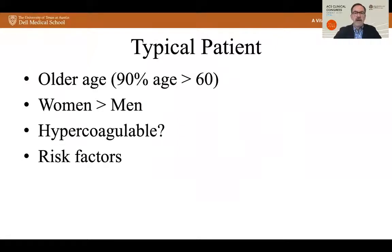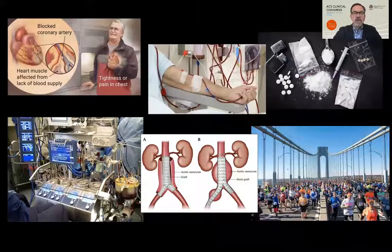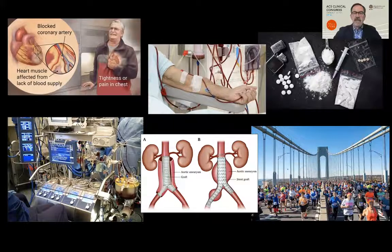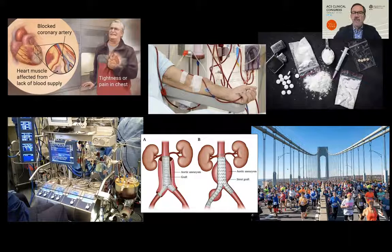The typical patient will be older — 95% more than 60 years old — more common in women than men, and may have a hypercoagulable disorder. Risk factors important to keep in mind include acute myocardial infarction and/or congestive heart failure, cardiopulmonary bypass, end-stage renal disease and dialysis, aortic intervention for AAA or aortoiliac disease either open or stenting, drug use specifically cocaine and amphetamines, and overexertion or vigorous exercise. What all these risk factors have in common is a low flow state to the left colon.